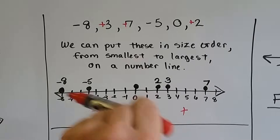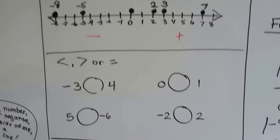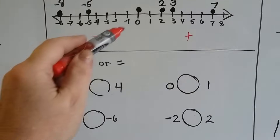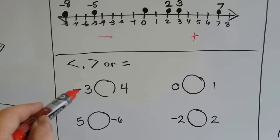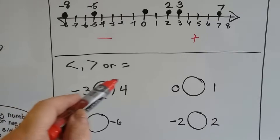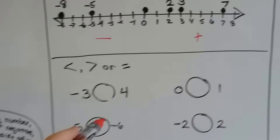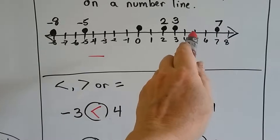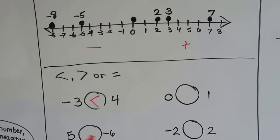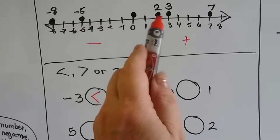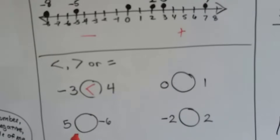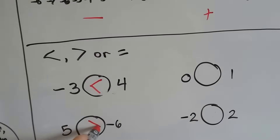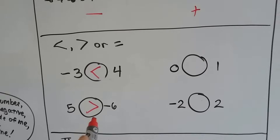They're getting bigger going this way and getting smaller going that way. If we did less than, greater than, or equal to, you can use this number line to help you. Negative three is smaller — it's less than four because four is on the positive side. Five or negative six? Five is always going to be bigger than a negative number.